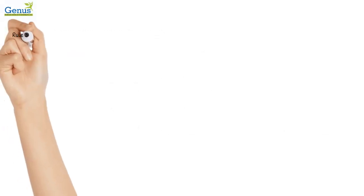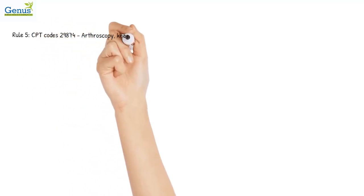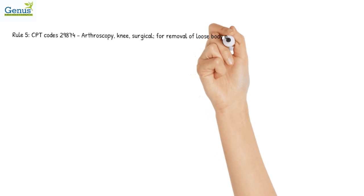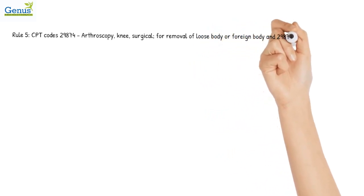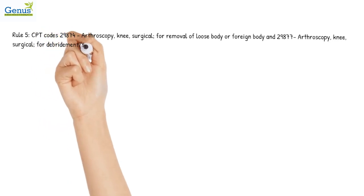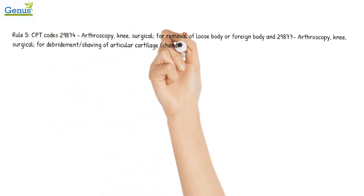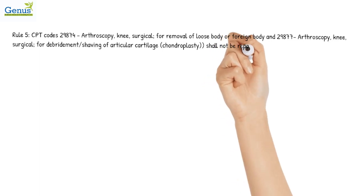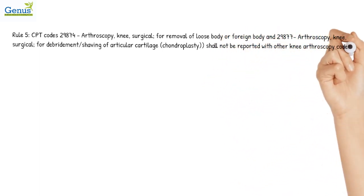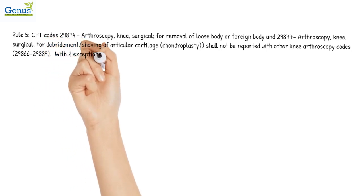Rule 5: CPT code 29874 (arthroscopy, knee surgical, for removal of loose body or foreign body) and CPT code 29877 (arthroscopy, knee surgical, for debridement and shaving of articular cartilage, chondroplasty) shall not be reported with other knee arthroscopy codes 29866–29889.